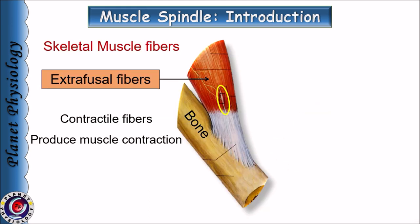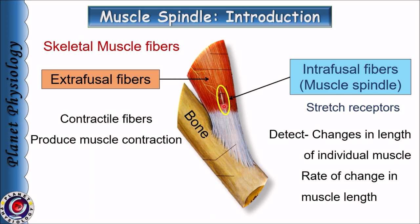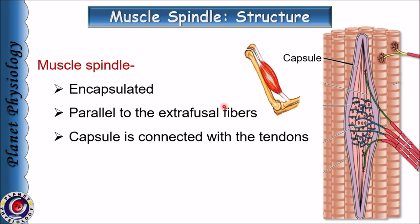Skeletal muscle fibers consist of extrafusal fibers and intrafusal fibers. Extrafusal fibers are the actual contractile muscle fibers that produce muscle contraction and they are innervated by alpha motor neurons in the spinal cord. Intrafusal fibers are covered by a fusiform capsule, they are spindle in shape, and they act as stretch receptors — they detect changes in the length of the individual muscle as well as the rate of change in muscle length.